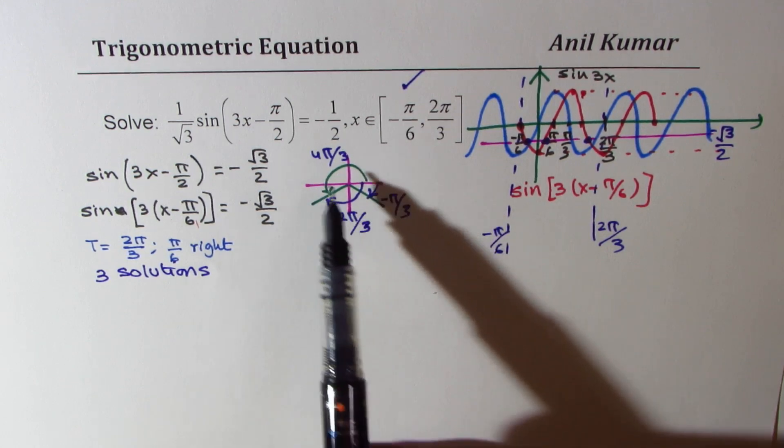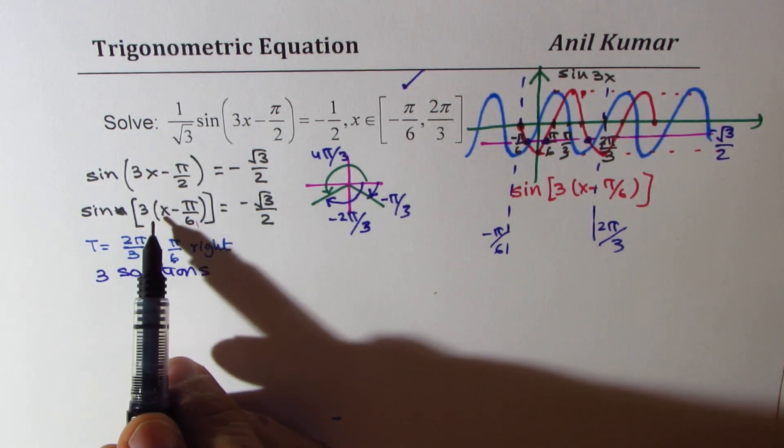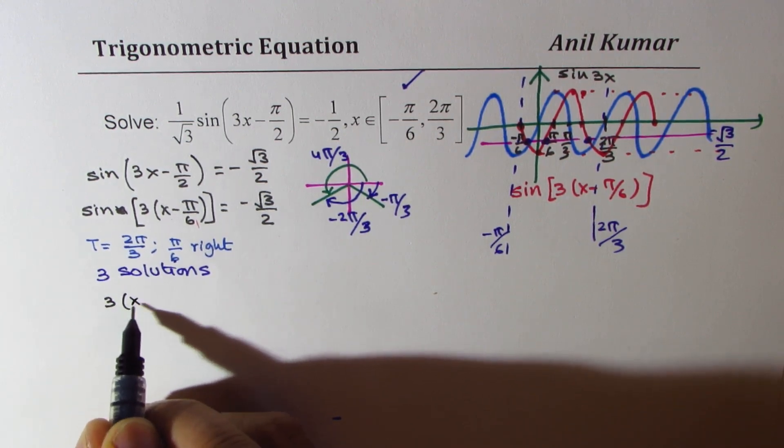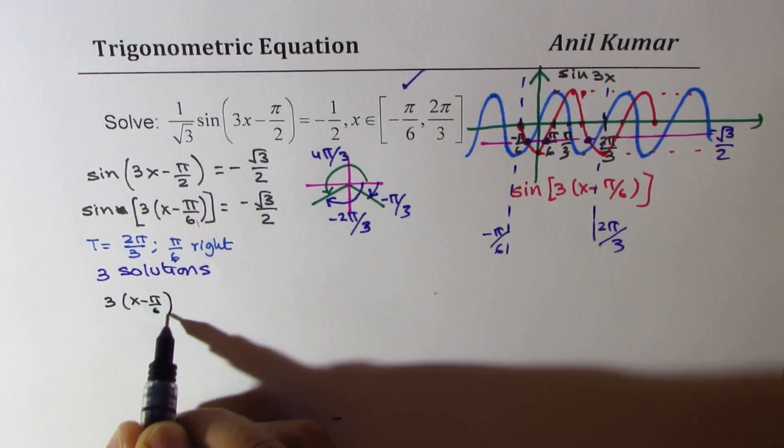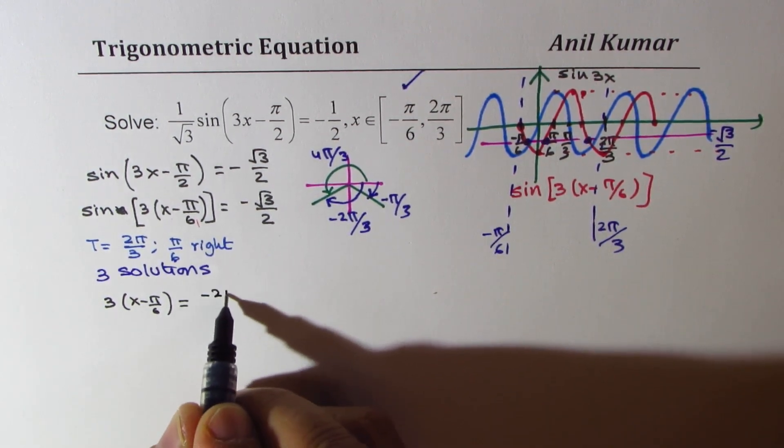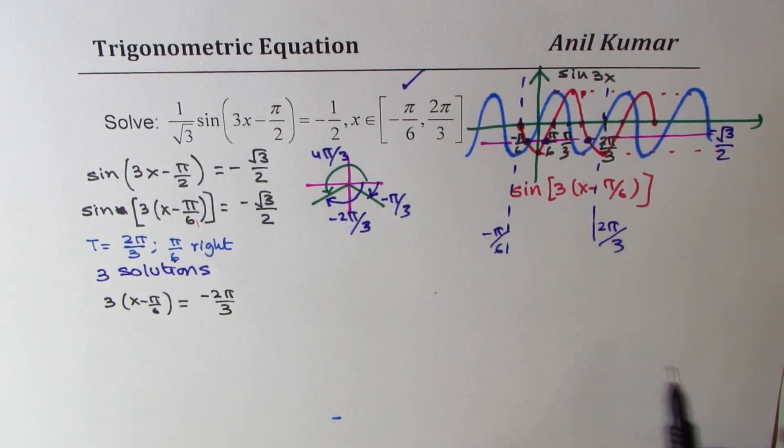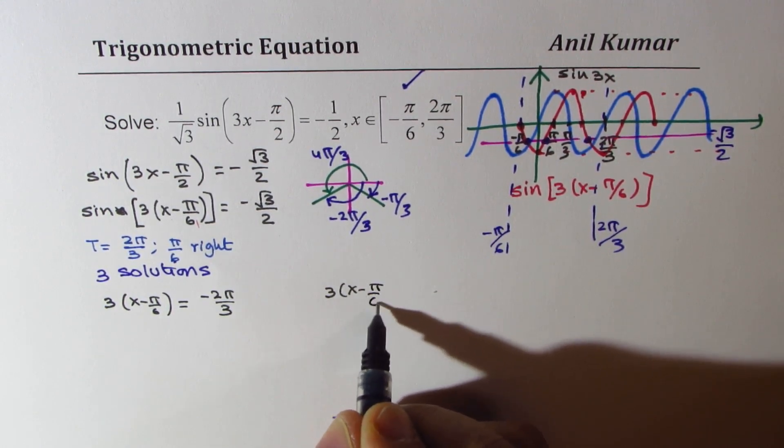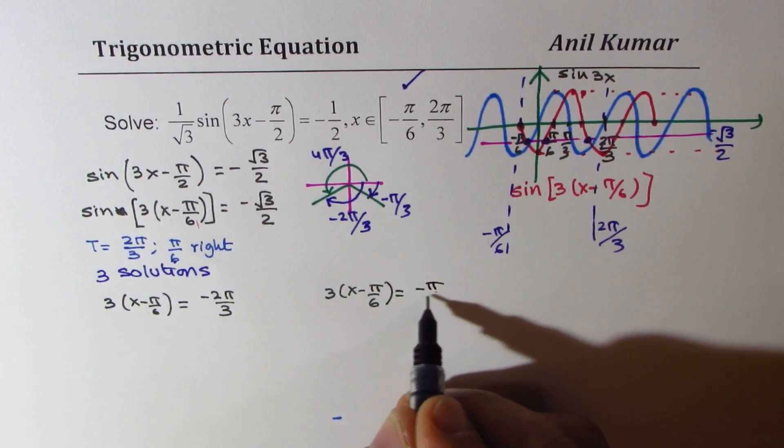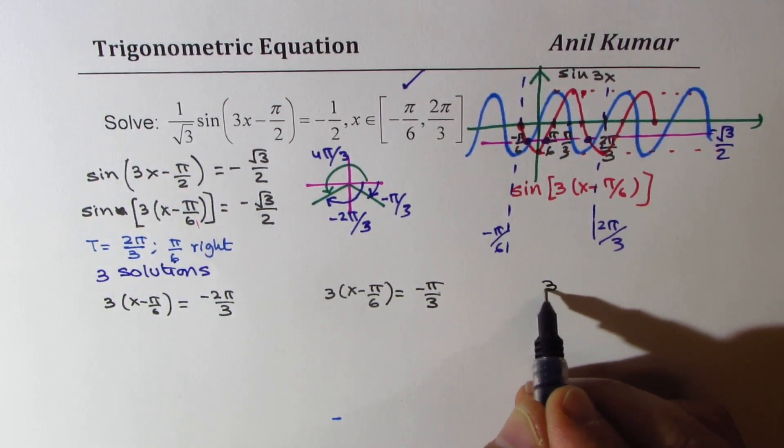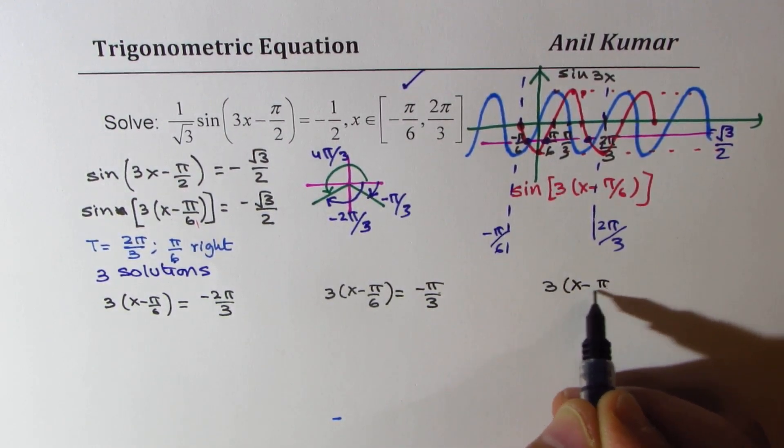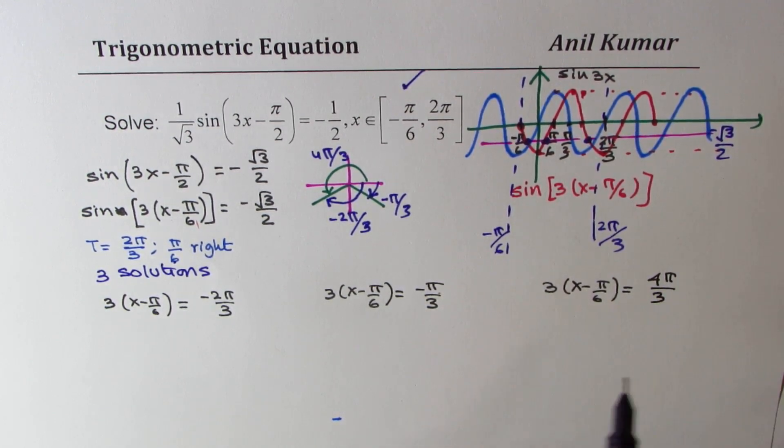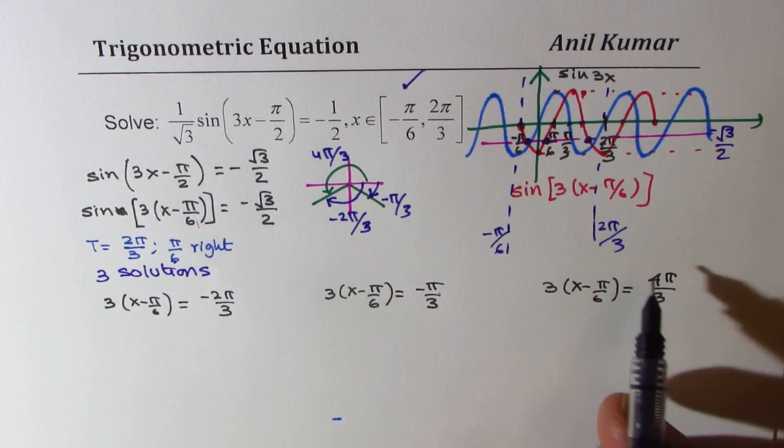These are the three solutions. We can write that 3 times x minus pi by 6 equals minus 2 pi by 3, or 3 times x minus pi by 6 equals minus pi by 3, or 3 times x minus pi by 6 equals 4 pi by 3.